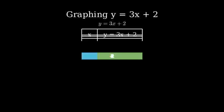For x equals 2: 3 times 2 plus 2 equals 6 plus 2 equals 8. Now that we have our table of values, let's plot these points on a coordinate system.